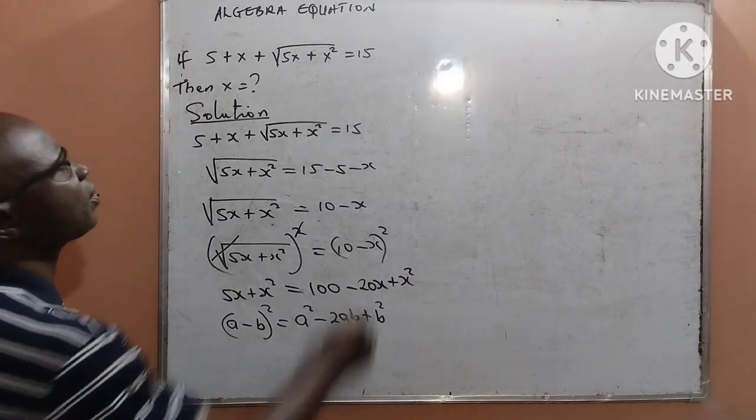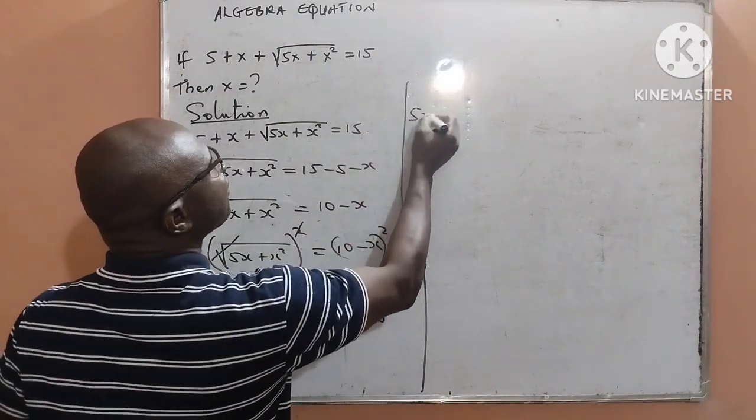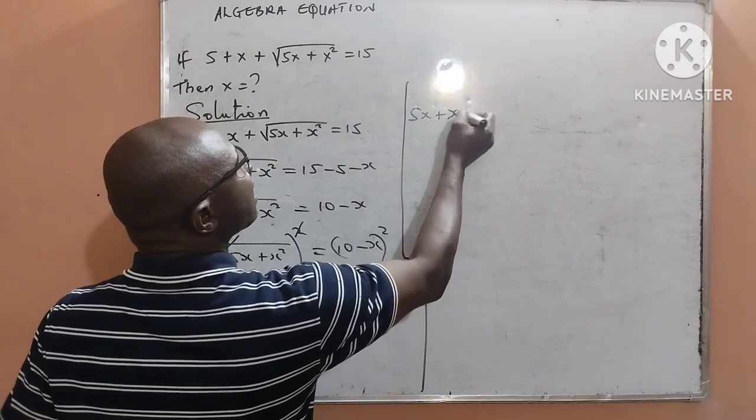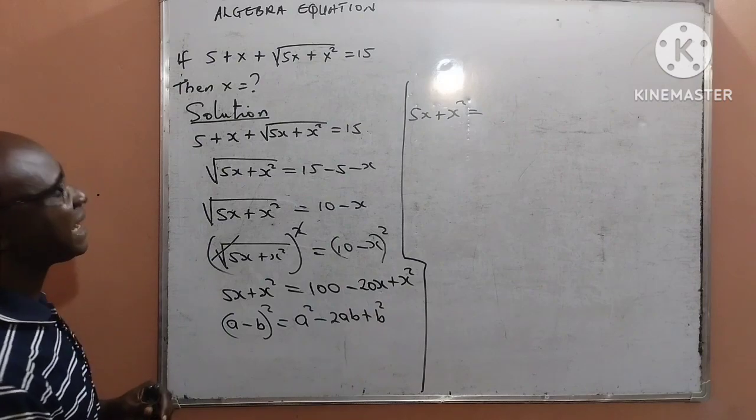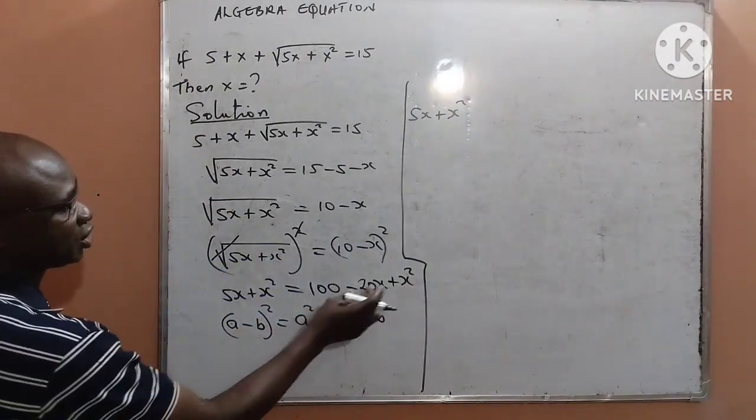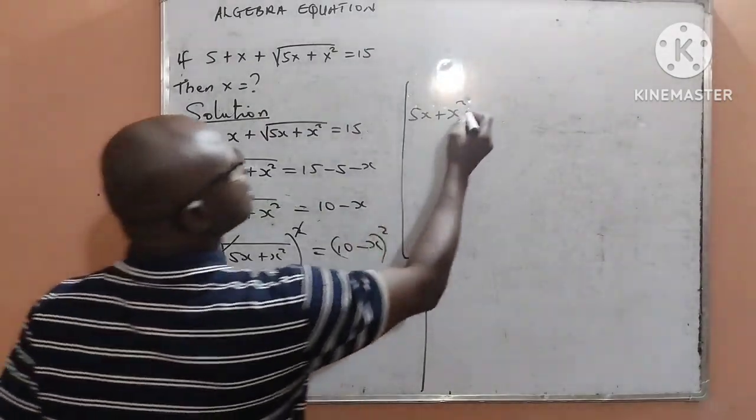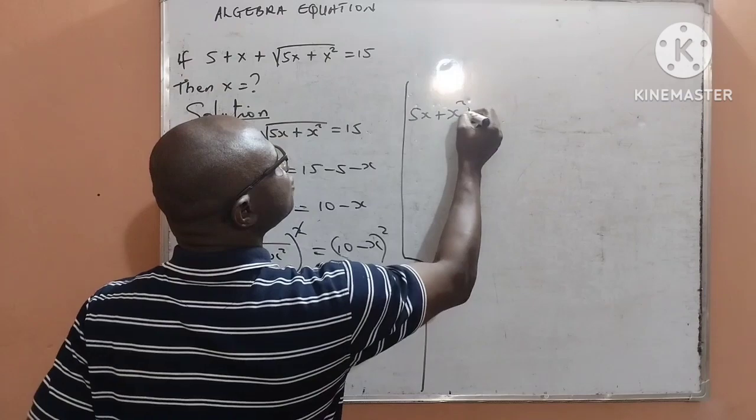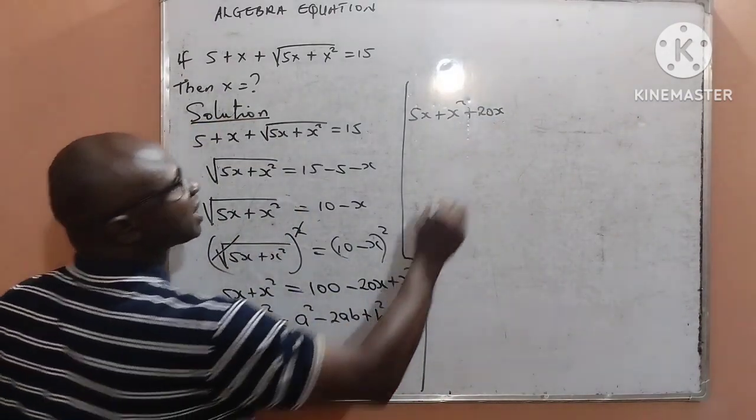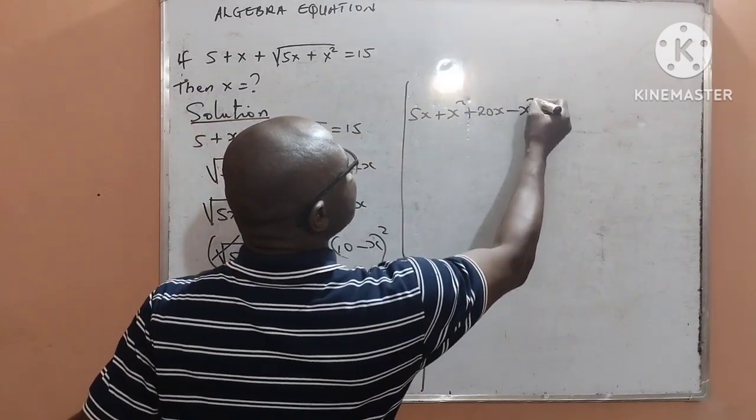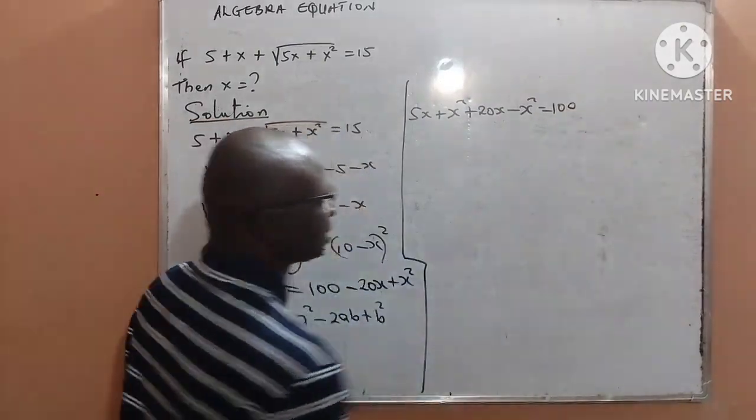Therefore, what next should be done is I will have 5x plus x squared equal to... I can move these two expressions to the left hand side. That means minus 20x will come to the left to become plus 20x, and plus x squared will come to the left to become minus x squared, left by the right hand side will just be 100.